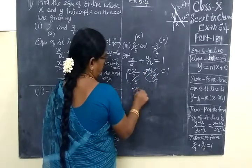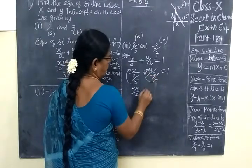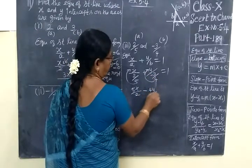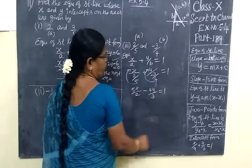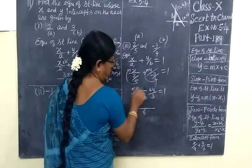So 5x by 2, minus minus if you put it back becomes plus, so plus 4y by 3 equal to 1. LCM is 6. Cross multiply.